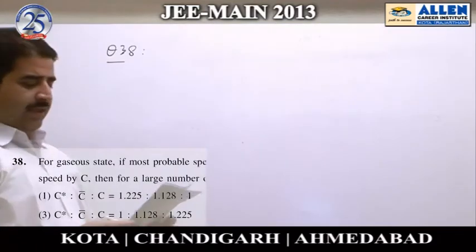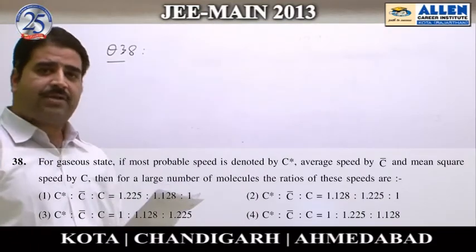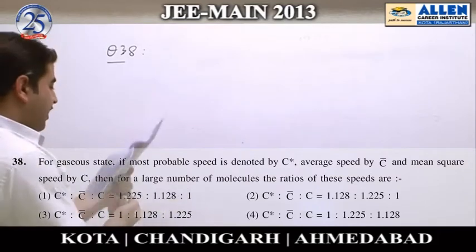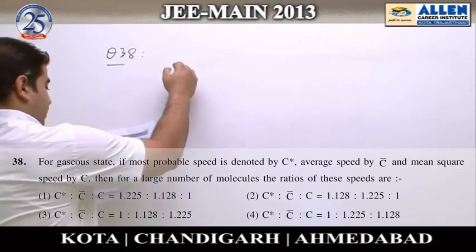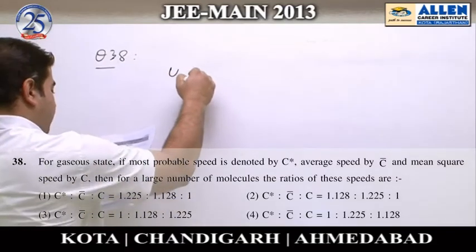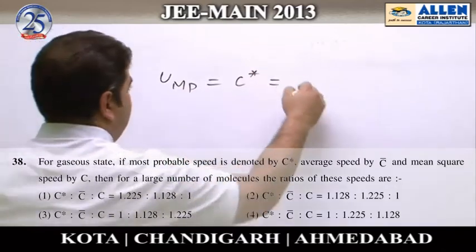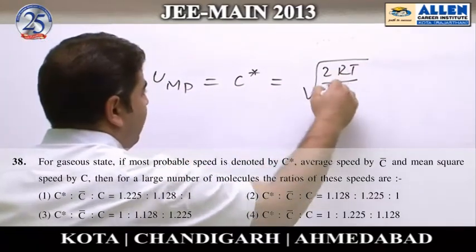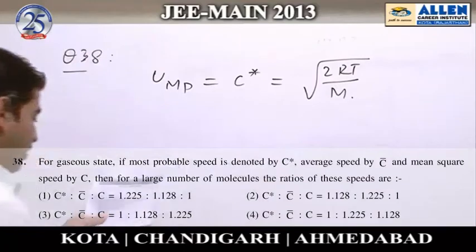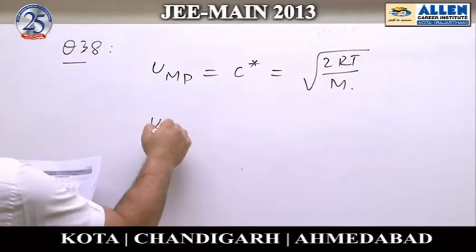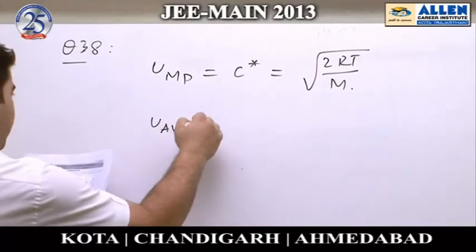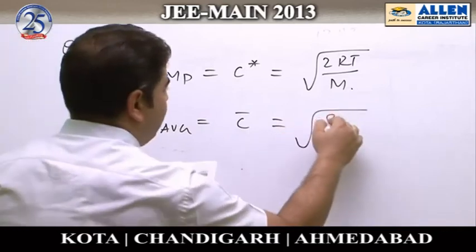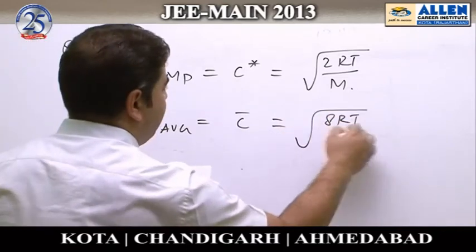In question number 38, we have to compare different kinds of statistical velocities for an ideal gas. We are given that the most probable velocity is equal to C star, written as √(2RT/M). The average velocity of the gas is C bar, with value √(8RT/πM).